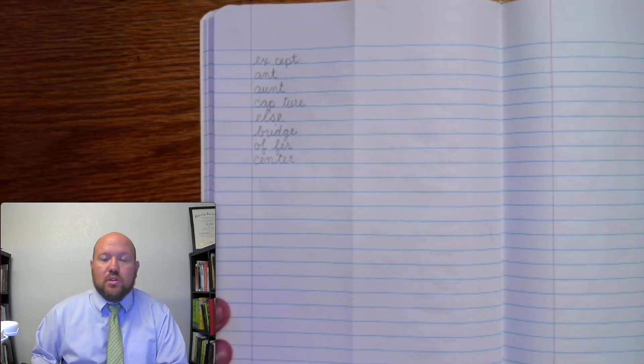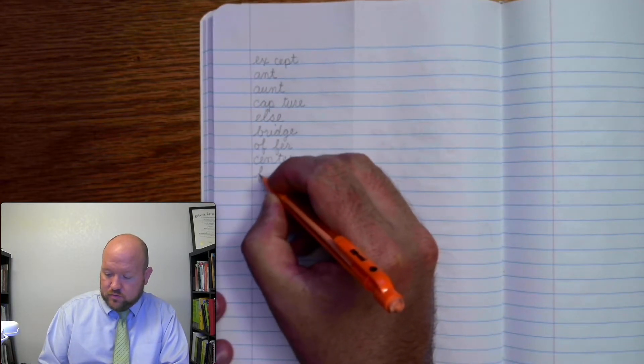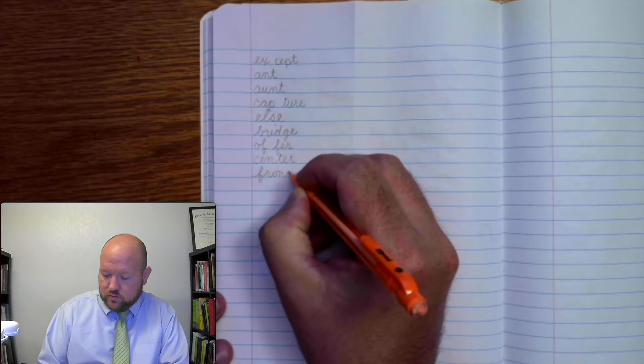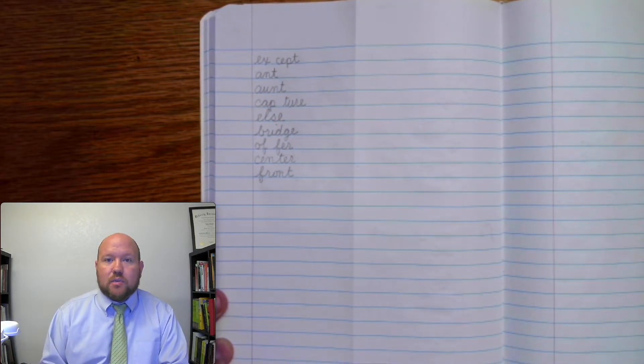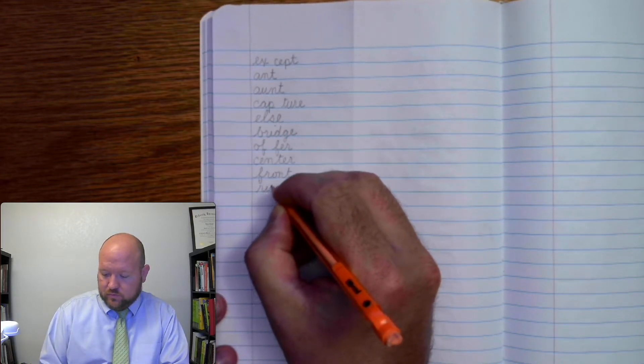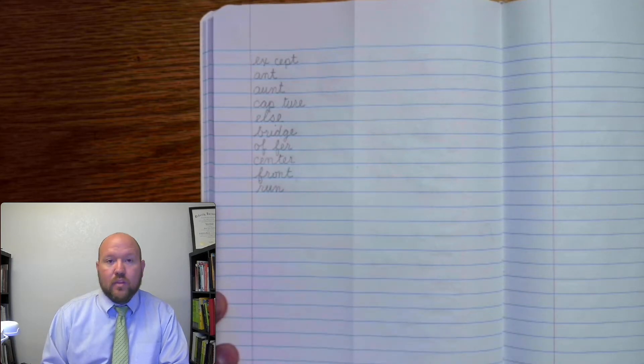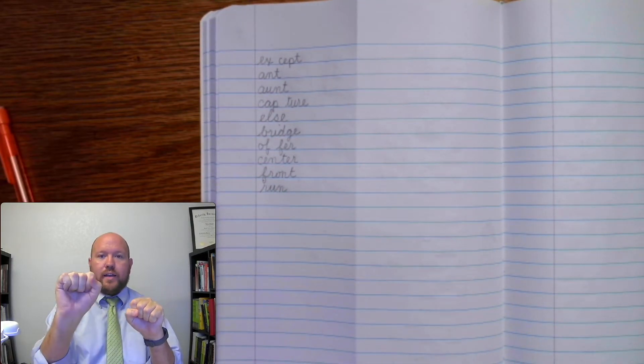Next one, one syllable, FRONT. Next one, one syllable, RUN. Next one, two syllables, RUNNING. RUN-NING.